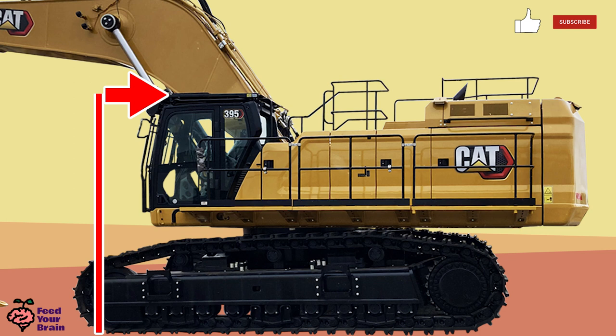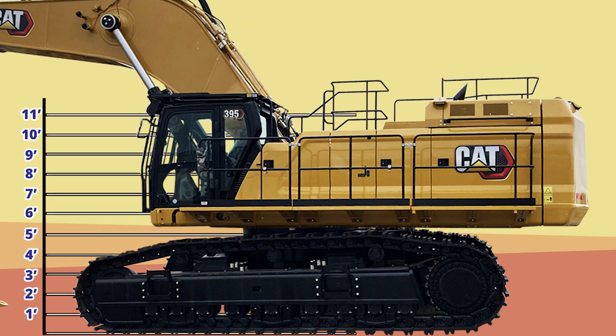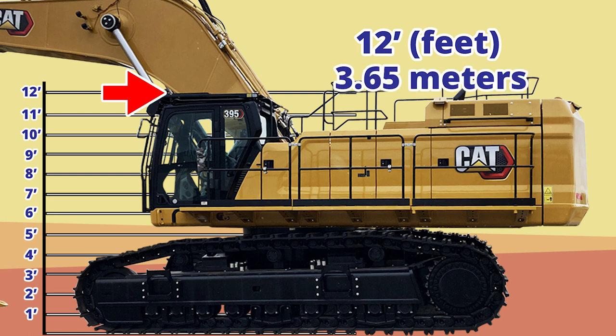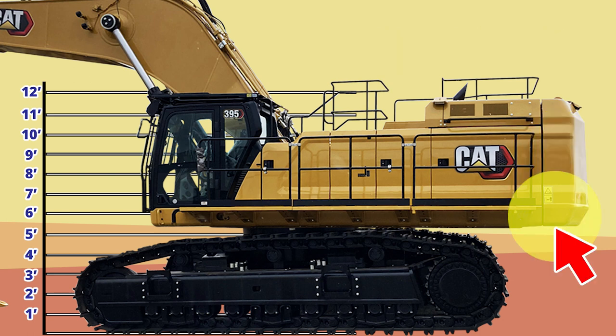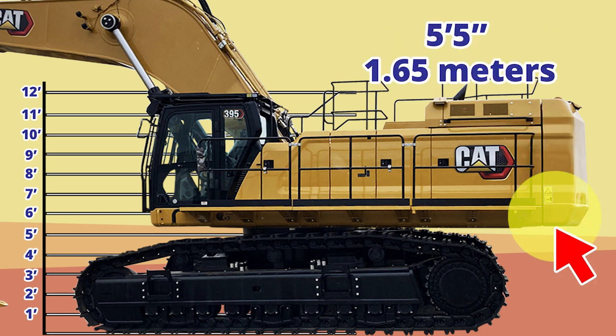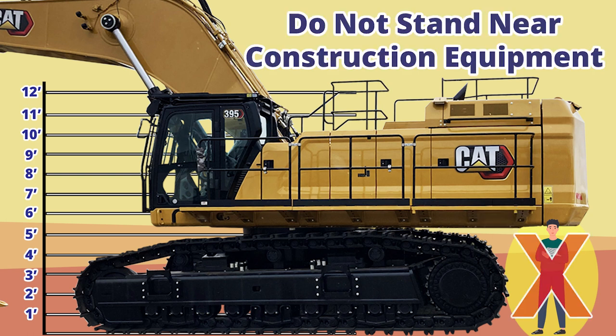The top of the cab here is a whopping 12 feet high. And this underside area is called the counterbalance — this underside is 5 feet 5 inches in height. This is how an average-sized person would look standing next to this large-sized excavator. Do not stand near construction equipment.